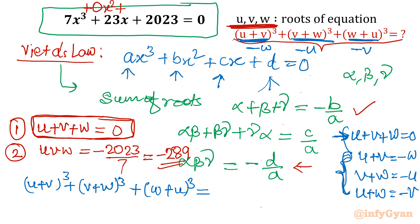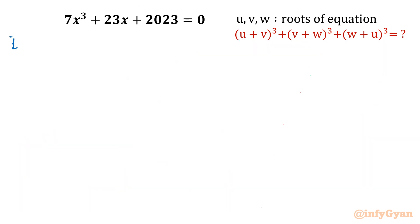So that results actually, let me write: -u³ + -v³ + -w³. Ultimately, that expression is minus of in bracket u³ + v³ + w³. Now our target is to find out this value only. How it will be possible? Using algebraic identity.